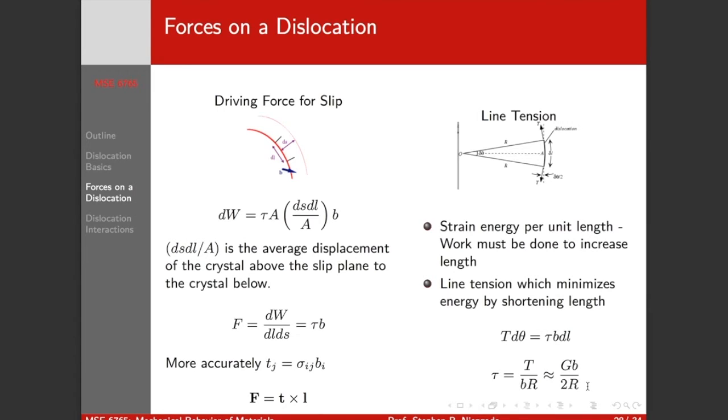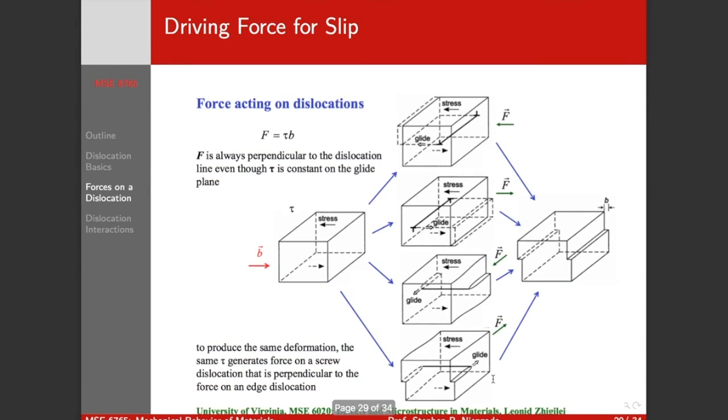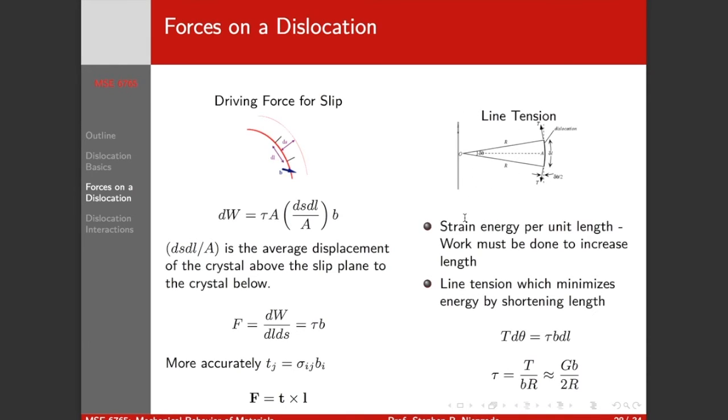Or you can think about it as line tension is the force that minimizes the energy by shortening the length. And that line tension has a form that's going to be the shear modulus times the Burgers vector divided by two times the radius of curvature of the dislocation line. So as our dislocation becomes perfectly straight, our radius goes to infinity. Our force holding it in the curved state goes to zero. But as we make a really small radius, our line tension becomes quite high. And this line tension is very important when we talk about strengthening mechanisms and plasticity, when dislocations have to curve around obstacles or slip around them. And we'll talk about that next week.